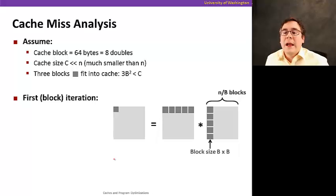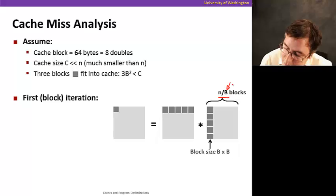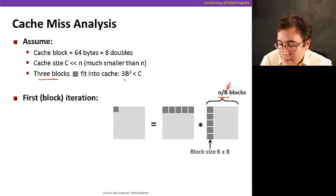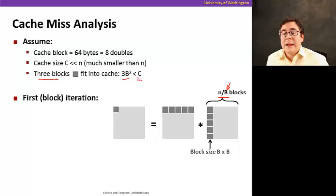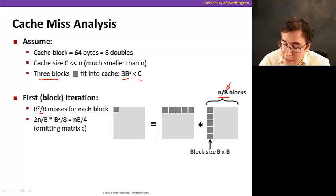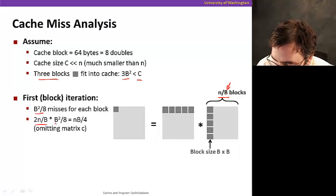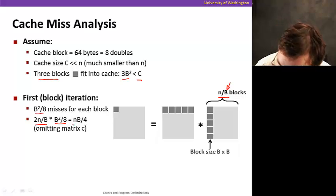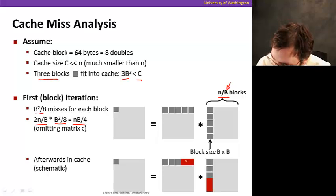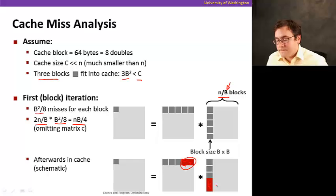Let's do a cache miss analysis of blocked matrix multiplication. We're going to have n over B blocks, where B is the block size. We know that three blocks fit in the cache, meaning 3B-squared is smaller than the cache size C. For each block, we have B-squared over 8 misses. The blocks that we access happen to still fit in the cache — isn't that cool?